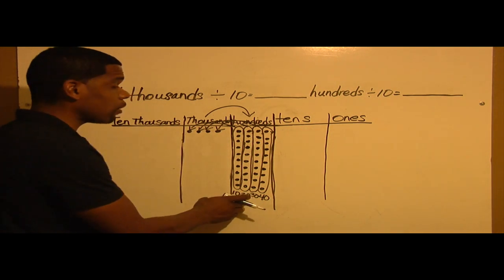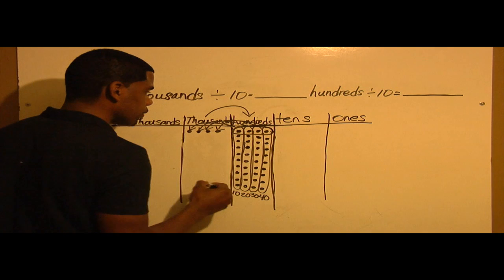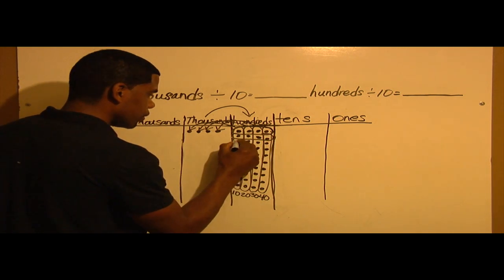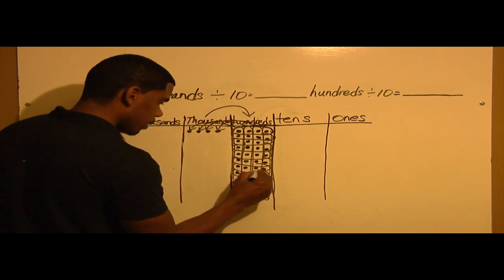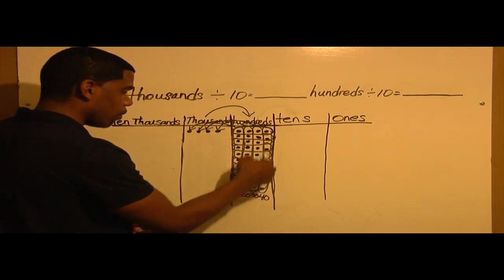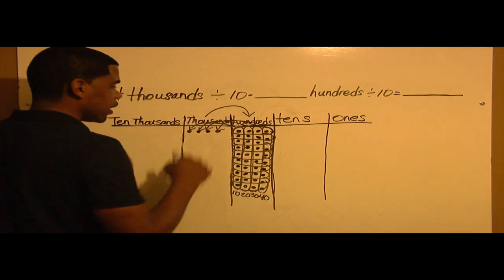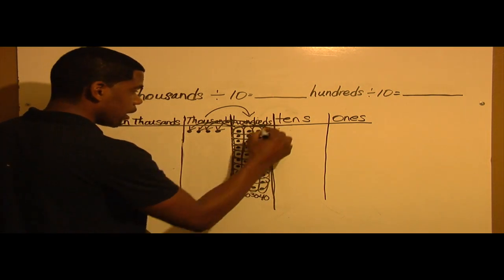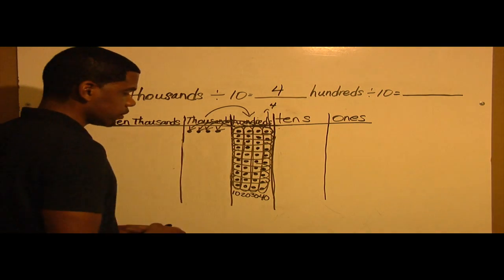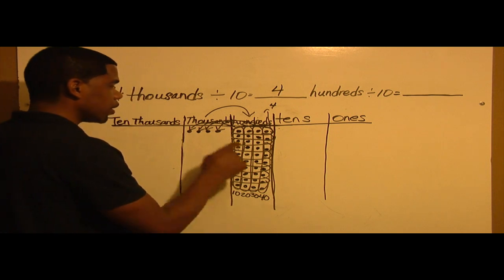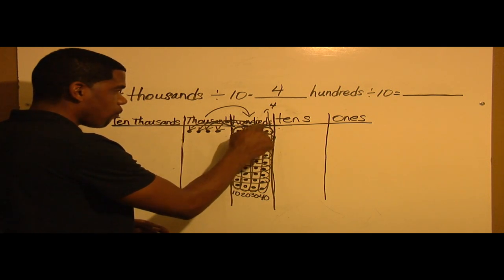But we need to make this into smaller units. We're going to circle across to represent smaller units of the hundreds: 1, 2, 3, 4, 5, 6, 7, 8, 9, 10. So this is 4 bundles of hundreds. What this represents is that 4,000 divided by 10 is equal to 4 hundreds. So I'm going to write 4 hundreds right here. If I unbundle this, 40 hundreds equals 4,000, but when I bundle them by circling straight across — 1, 2, 3, 4 — that makes 4 hundreds.